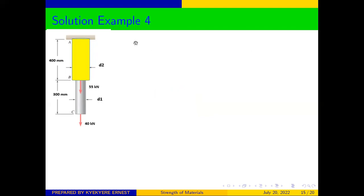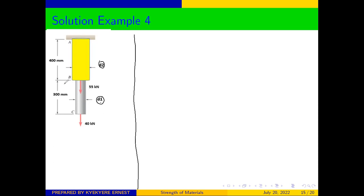We are asked to determine D1 and D2 from this system. Since we have diameter D1 and D2 which are different from each other, we need to consider the sections differently and then solve in that regard. Therefore, we will first consider section AB.